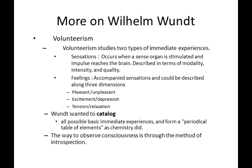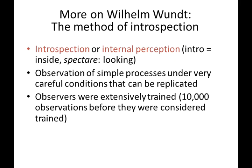Wundt wanted to catalog all the basic immediate experiences and form a periodic table of elements, as chemistry did. The way to observe consciousness is through the method of introspection — or internal perception — the observation of simple processes under very careful conditions that can be replicated. Key idea: replication. Observers were extensively trained, with at least 10,000 observations before they were considered trained individuals in the use of his type of introspection.